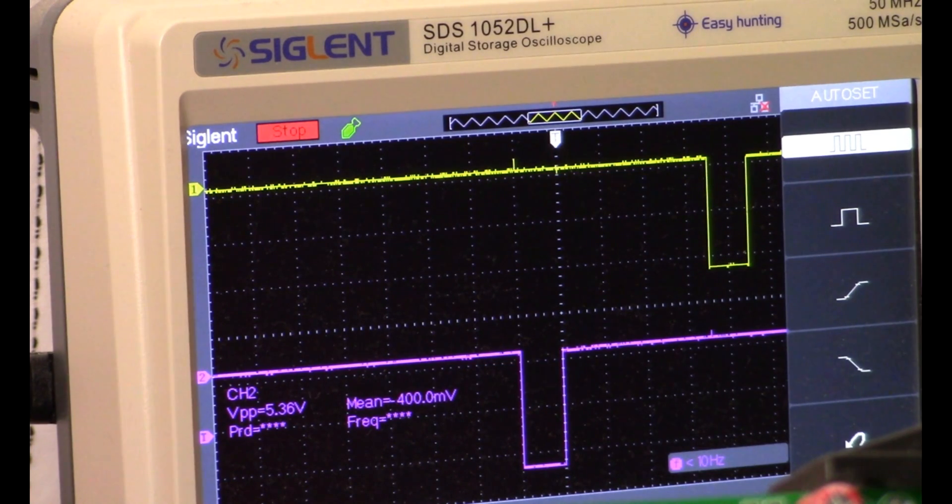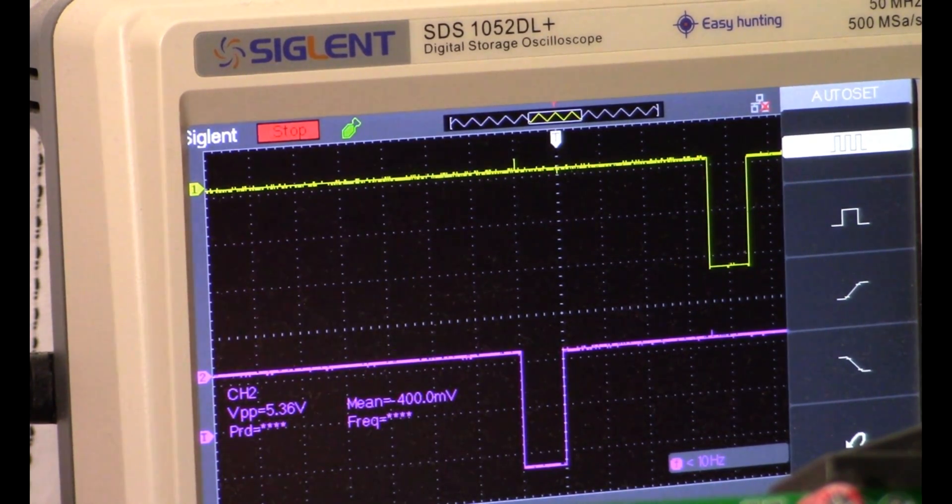So the delays in the pulse widths are set by a resistor capacitor time constant, and the resistor component is made up of the potentiometer and a fixed resistor. So I'm just going to go ahead and adjust this really quickly here.